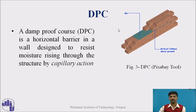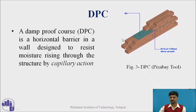Next is DPC, the damp proof course. Damp proof course is a horizontal barrier provided in between the walls. The minimum thickness provided is about 150 mm. The function of this damp proof course is to resist moisture rising through the structure by capillary action — to reduce or nullify the capillary action of moisture.